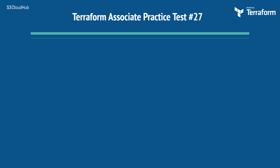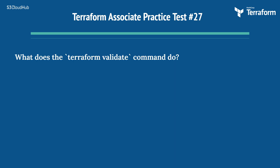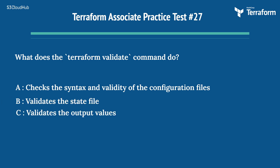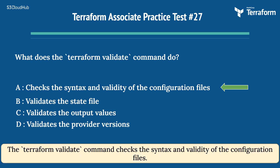The twenty-seventh question is: what does the terraform validate command do? Option A: checks the syntax and validity of the configuration files. Option B: validates the state file. Option C: validates the output values. Option D: validates the provider versions. The right answer is Option A: checks the syntax and validity of the configuration files. The terraform validate command checks the syntax and validity of the configuration files.